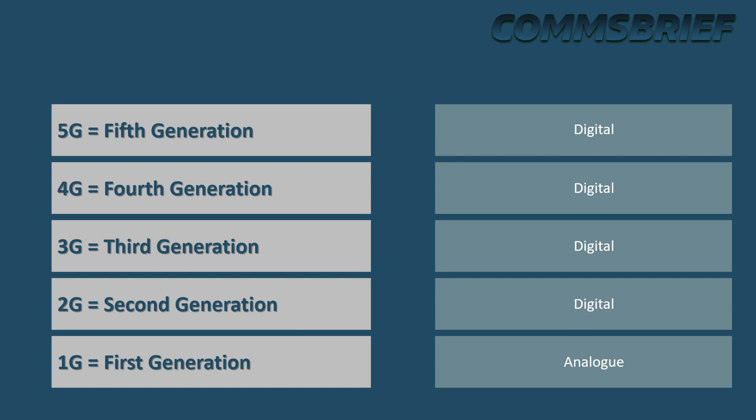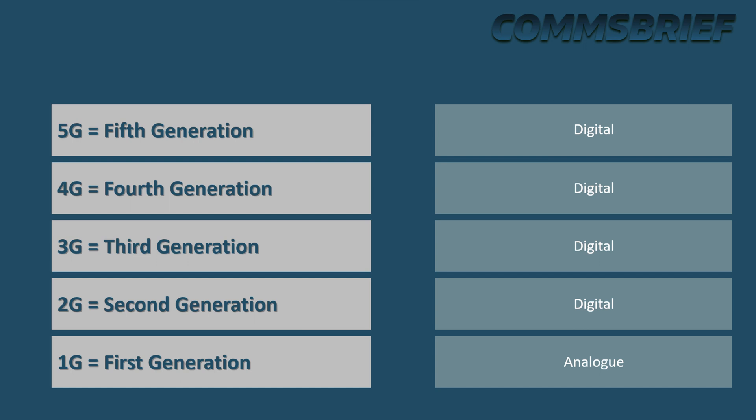So: 1G, 2G, 3G, 4G, and 5G mobile networks. If you look at this slide on the screen, there have been five generations of mobile networks, referred to as 1G, 2G, 3G, 4G, and 5G. The first generation was analog, and all the other generations were digital.